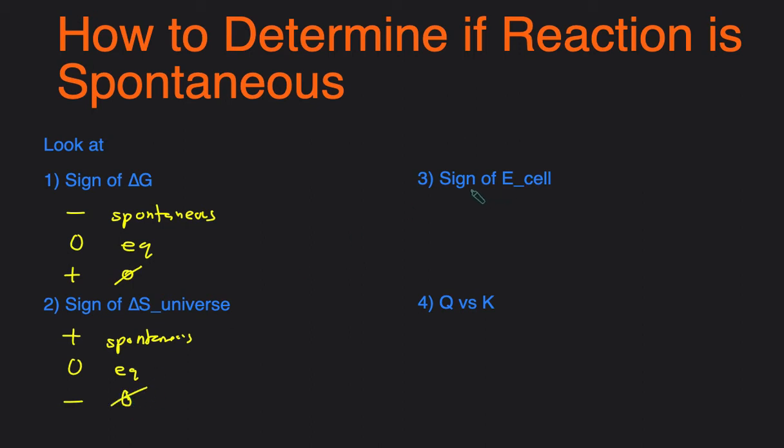Next, you can take a look at the sign for the cell potential, and that's the same pattern as the sign for delta S. So if it's positive, the reaction will be spontaneous. If it's zero, it means the reaction is at equilibrium. And if it's negative, it means the reaction is not spontaneous. And when I say the reaction is not spontaneous, it's not spontaneous in the forward direction, but it will be spontaneous going backwards.